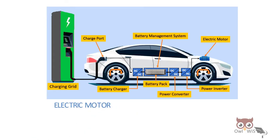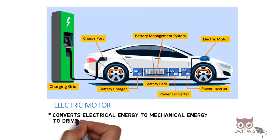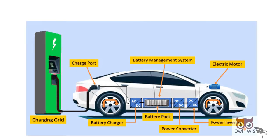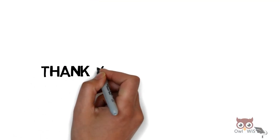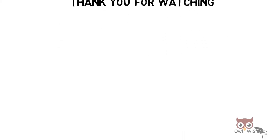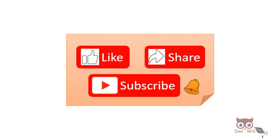The last component is the electric motor. It is used to convert electrical energy into mechanical energy to drive the vehicle. These are the major components of an electric vehicle. Thank you for watching — if you like the content, please like, share, and subscribe.